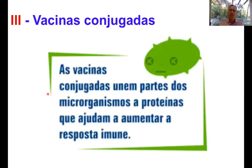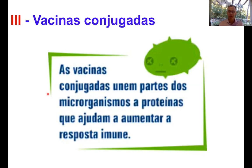Essa foi uma estratégia muito genial, que veio para suprir a deficiência dessas vacinas feitas de polissacarídeos, que são pouco imunogênicas. O que é vacina conjugada? É quando a gente une aquele polissacarídeo, que é um antígeno importante dessas bactérias, com uma proteína. Essas duas moléculas são unidas e isso vai aumentar a resposta imune, fazendo com que essa resposta imune seja muito mais potente, conferindo uma proteção mais eficaz nos indivíduos vacinados.